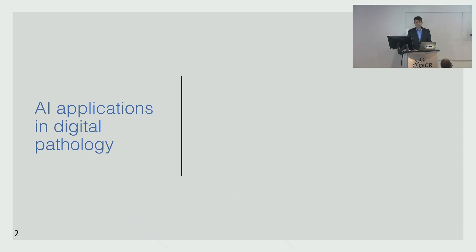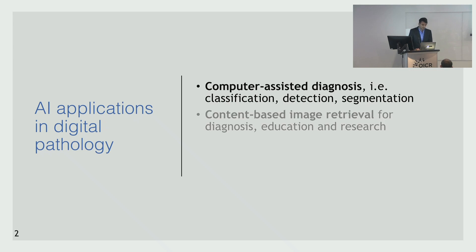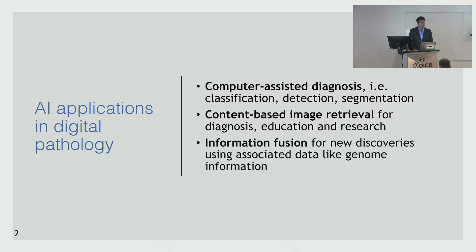Essentially, we can categorize the AI efforts in digital pathology into three major subcategories. First are computer-assisted diagnosis tasks — for example, classification, detection, and segmentation tasks done within research labs. Also, content-based image retrieval or image search, which is used for diagnosis, education, and research. And finally, we can use other information — metadata associated with our images — to get more intuition about the pathology images, like genome information provided alongside the slide.